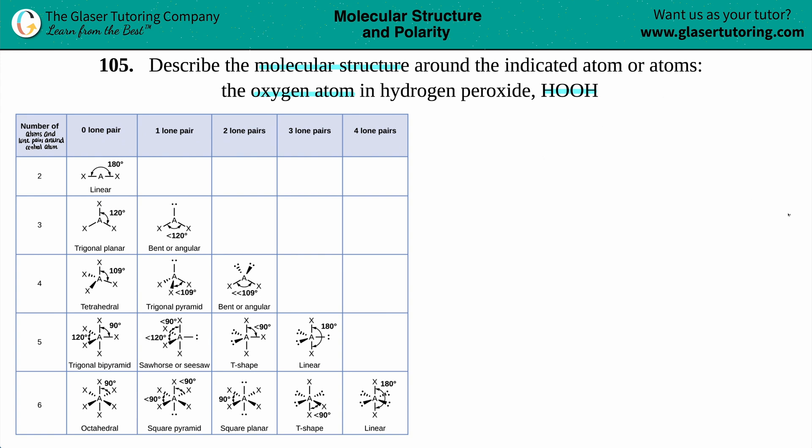So we want to find out the molecular structure, and whenever they want you to find out a molecular structure, the easiest thing to do is to draw the Lewis structure. You can get a lot of answers out of the Lewis structure, and molecular geometry or molecular structure is one of them.